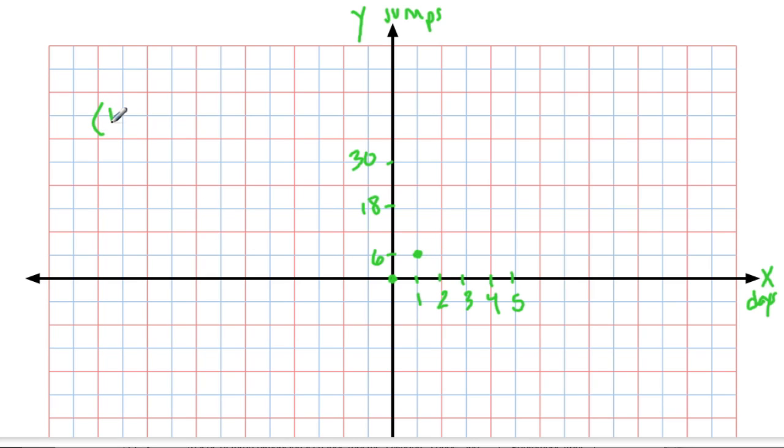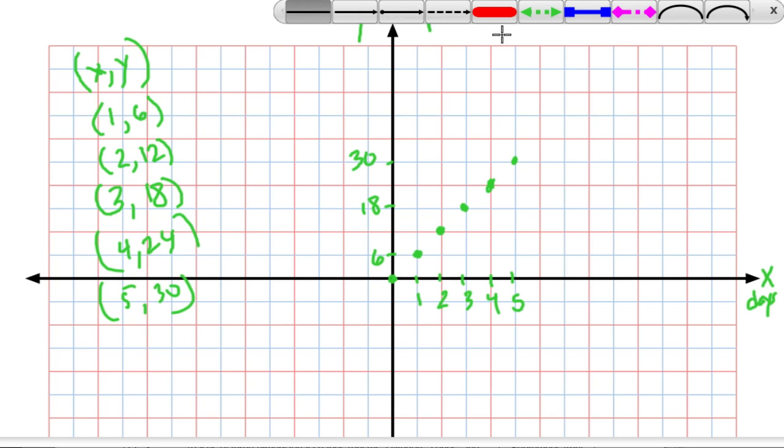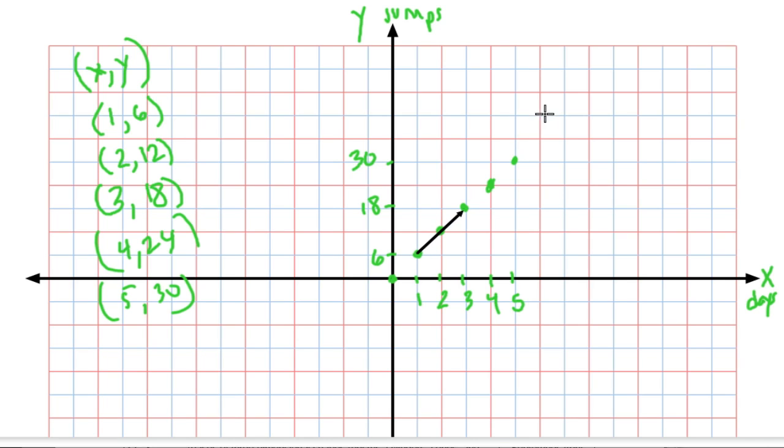On day one the cat jumped six times, so that's a plot right here. You can think of it like this: day one, six jumps. Day two, remember there are twelve jumps, so you'll plot that at two and twelve. Day three, eighteen jumps, because we're thinking about our x and y points—where are they on the graph? x is the days and y is the number of jumps. So three and eighteen right here, then four and twenty-four, and five and thirty. Plot those two.